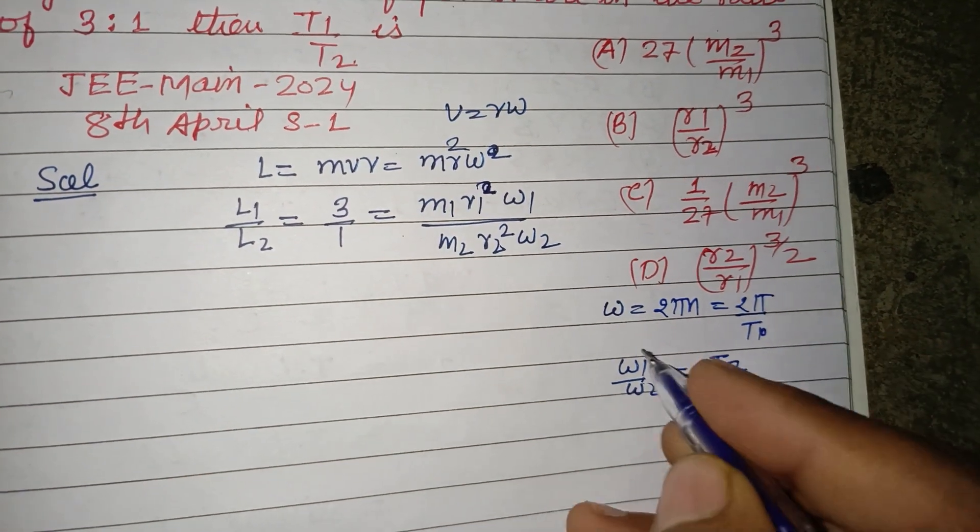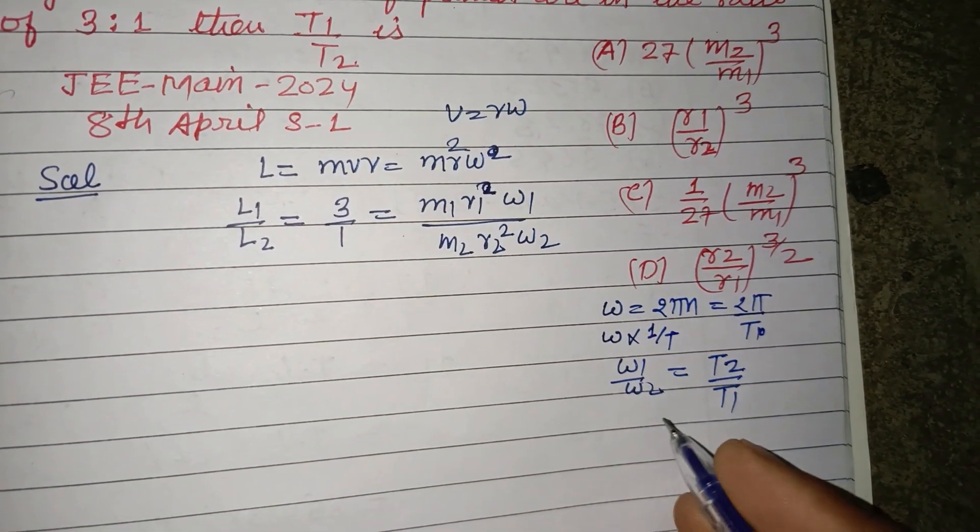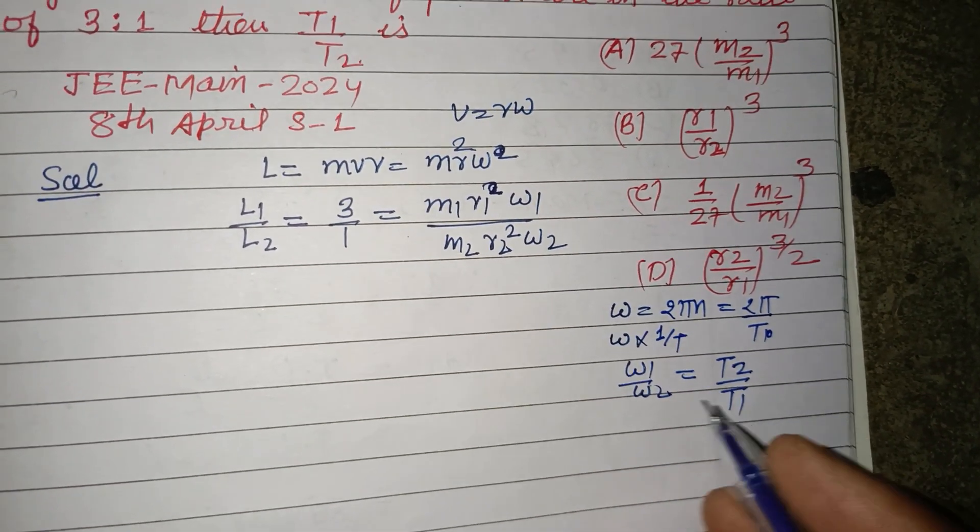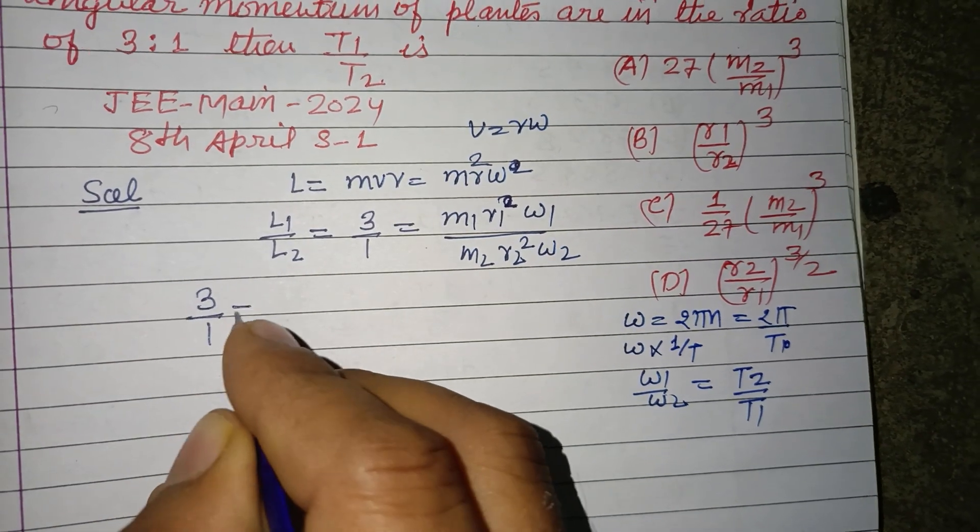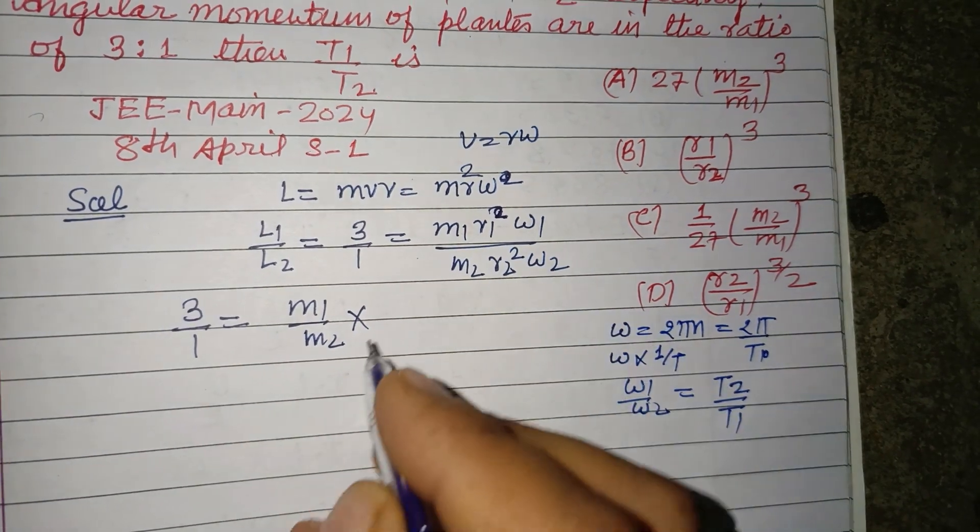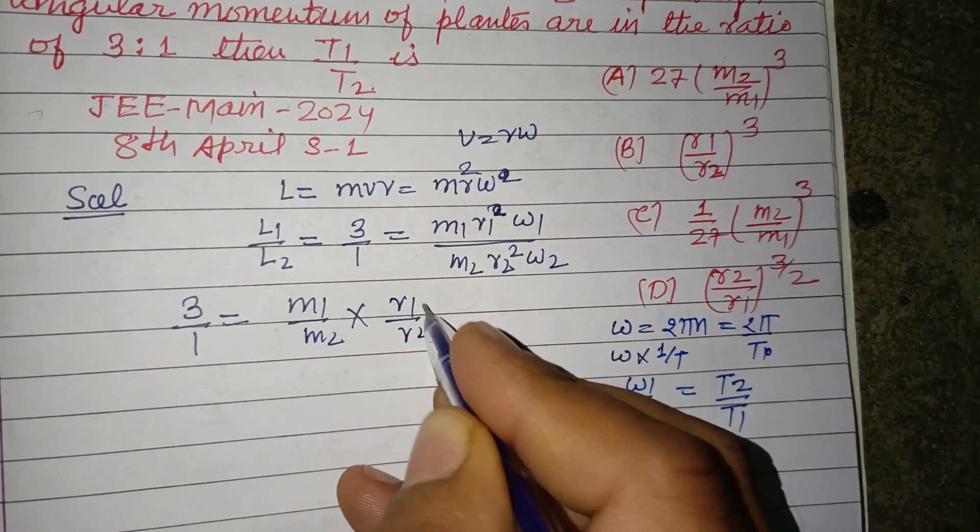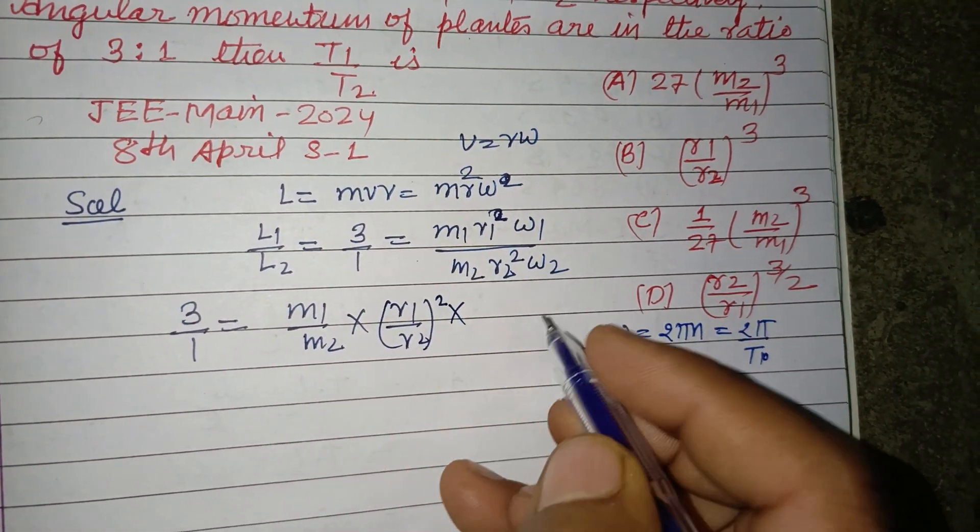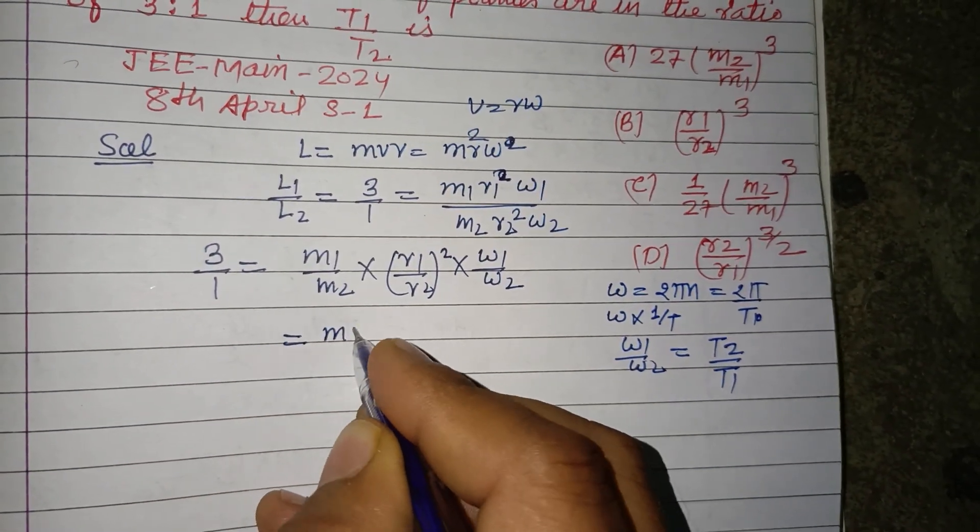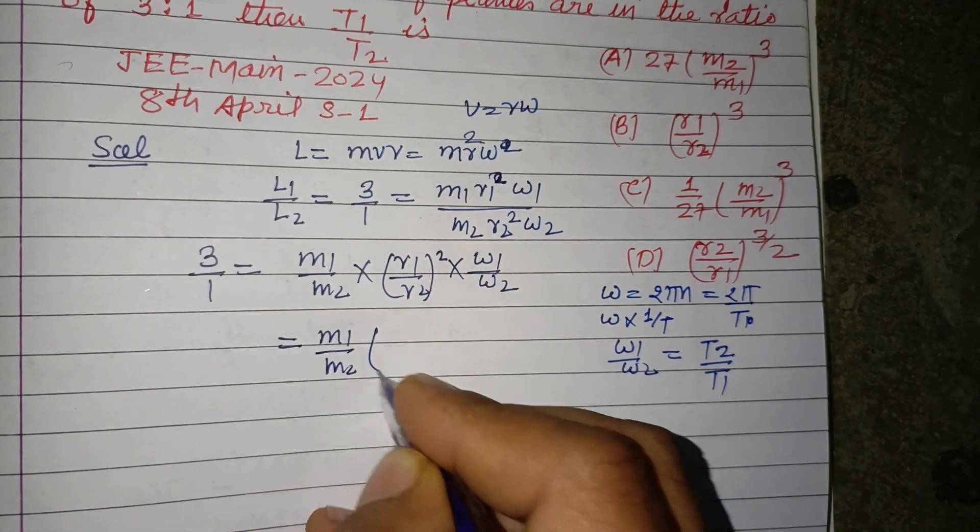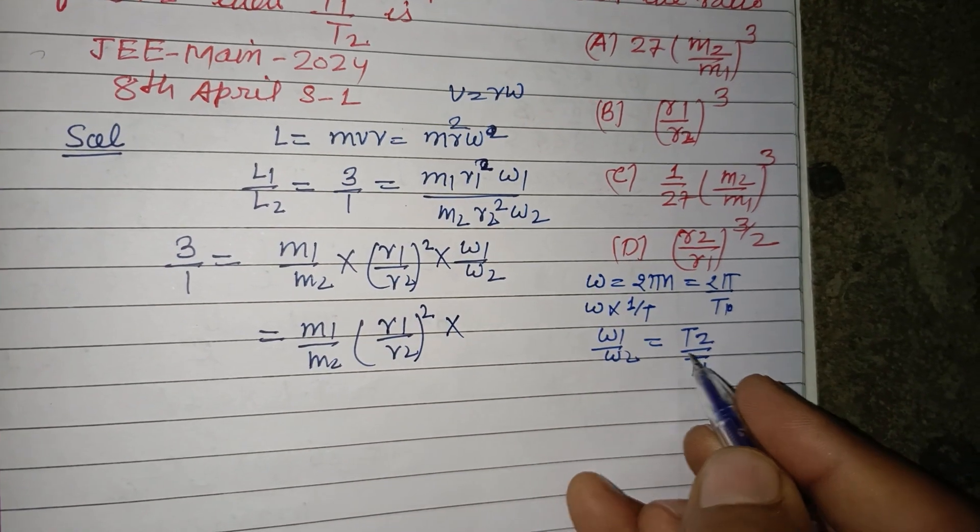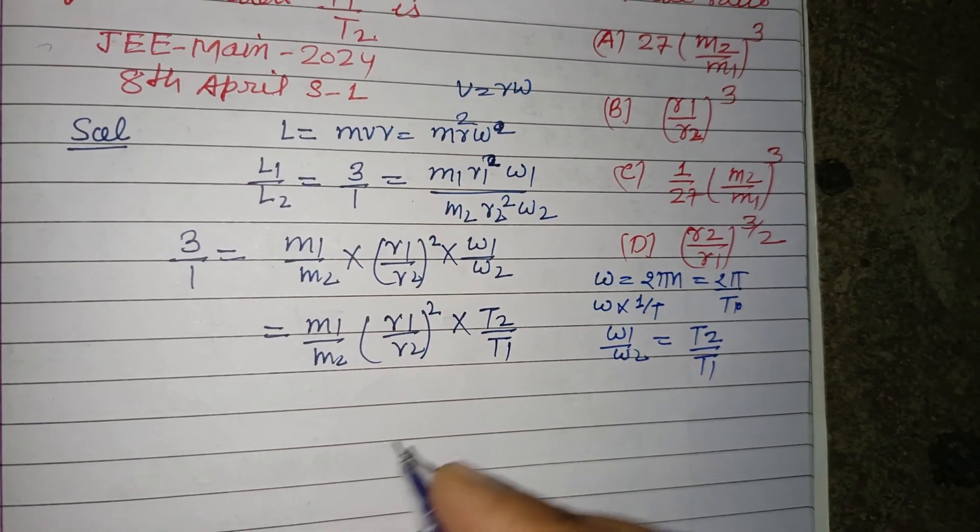Omega is inversely proportional to time period T. So 3 ratio 1 equal to M1 upon M2 into R1 upon R2 whole square into ω1 upon ω2. So ω1 upon ω2 is T2 over T1.